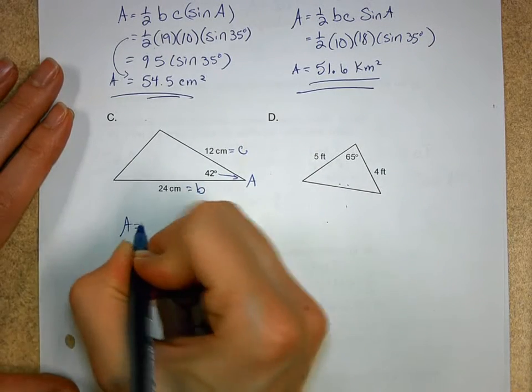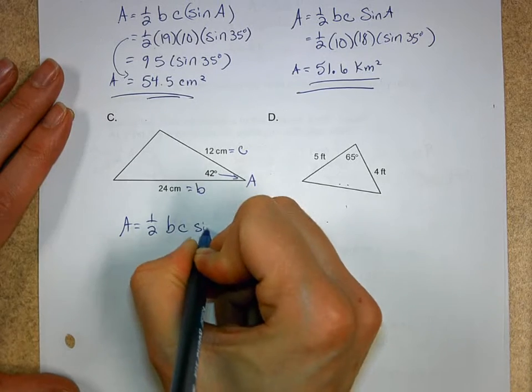Again, write your formula down. It's one half B C sine A. And the cool thing is, if you forget,